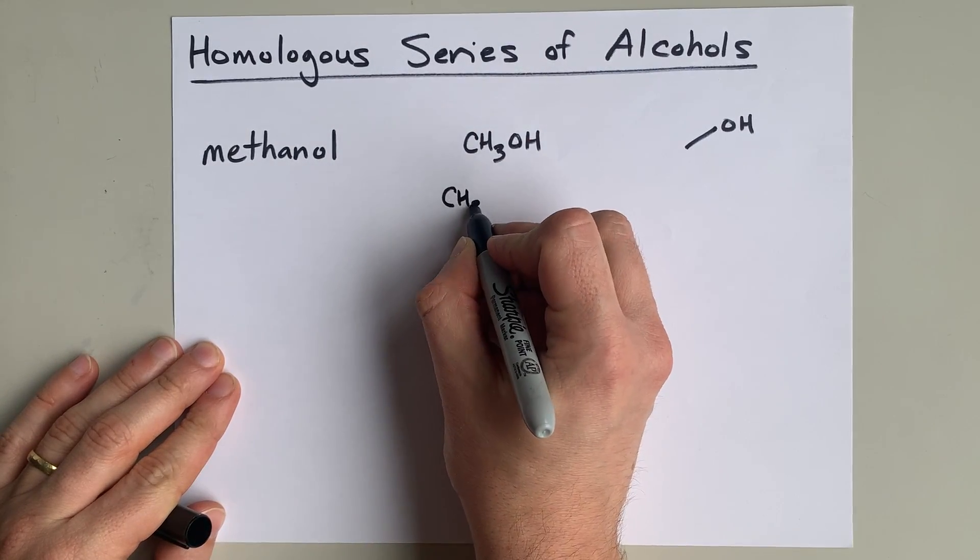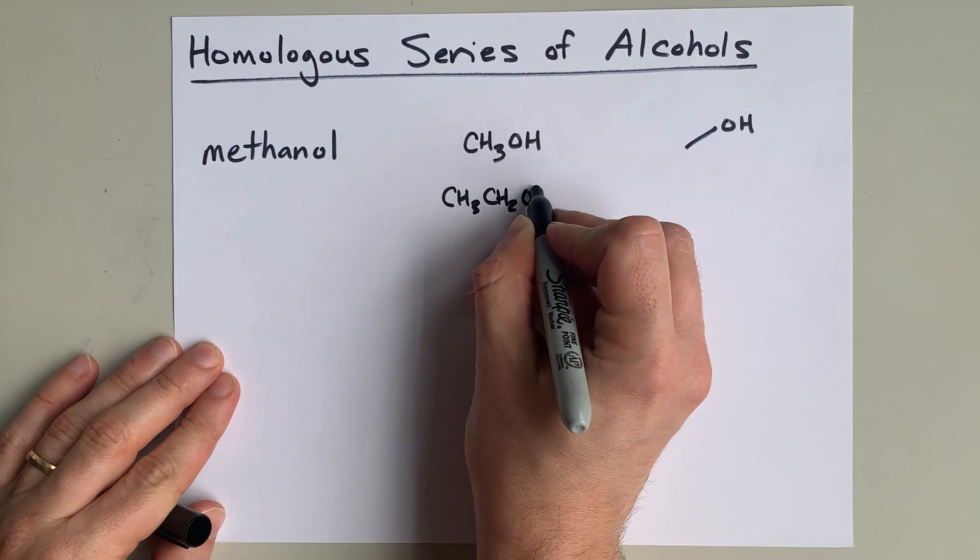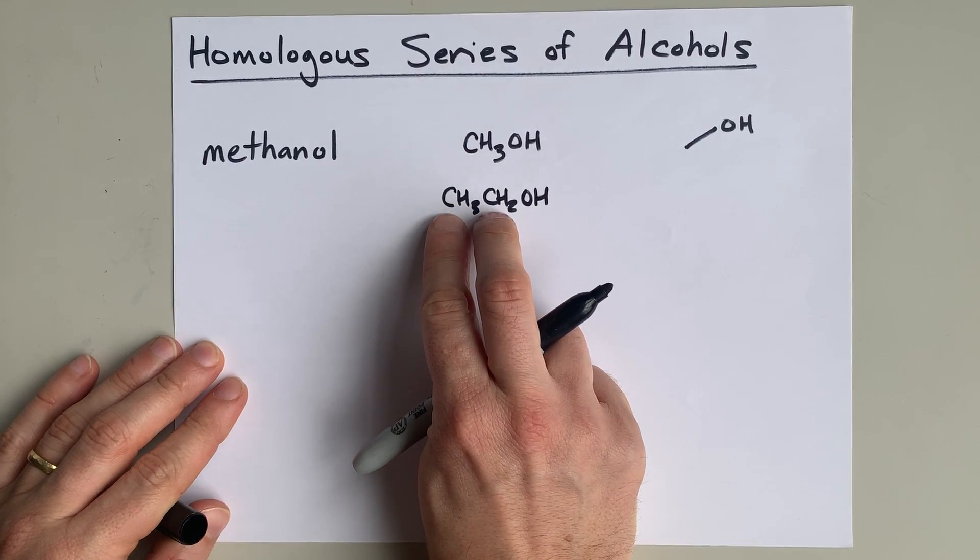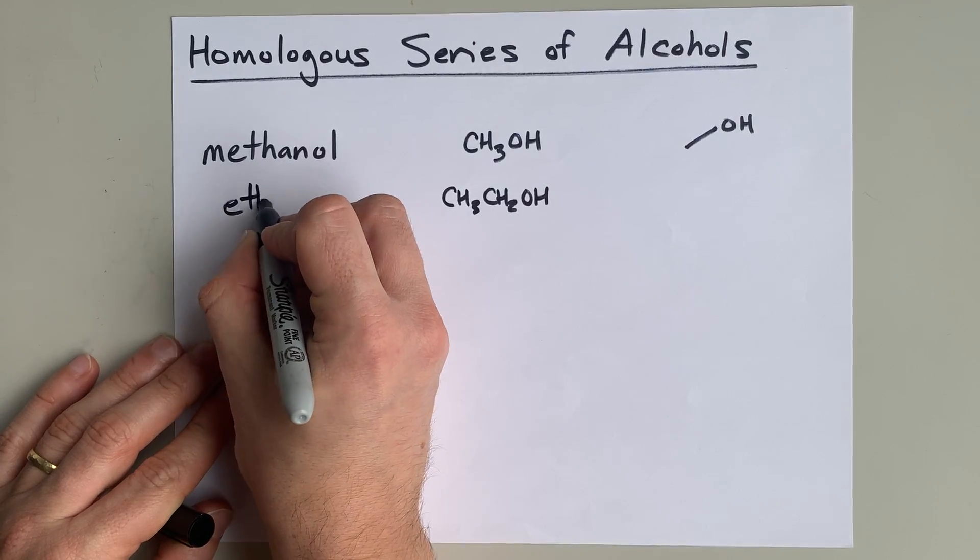If you have CH3CH2OH, that's a two-carbon chain with an OH at the end, you get ethanol.